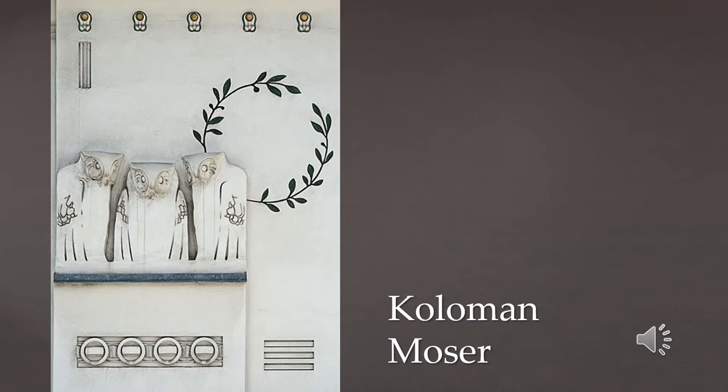Koloman Moser was another person in the Secessionist movement, working to create household goods, paintings, graphic arts, and stained glass. He collaborated extensively with Josef Hoffmann and co-founded the Wiener Werkstätte, a studio creating functional and aesthetically pleasing household goods. The owls on the Vienna Secession building with the laurel wreath were created by Moser.